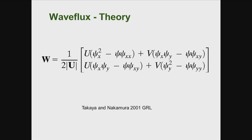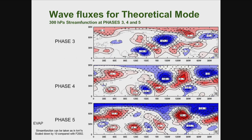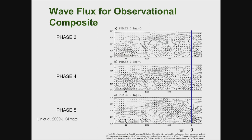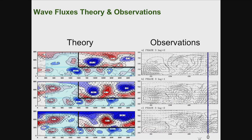We also look at the wave activity flux following Takaya and Nakamura, as shown yesterday. Here is the theoretical mode — we look at the wave activity flux for phase three, phase four, and phase five. You see the development of the wave flux activity in the North Pacific, then extending to North America. In the following phase, there is meridional propagation of the wave activity flux, which is very consistent with observations. The theory matches quite well with observation.